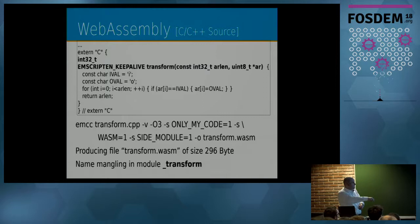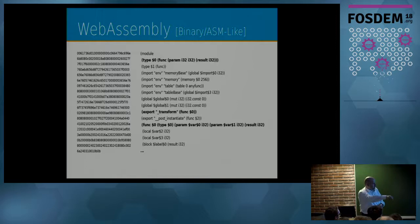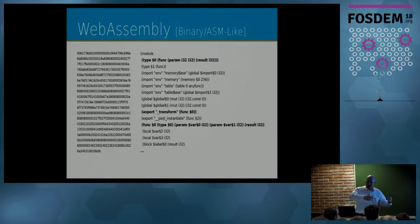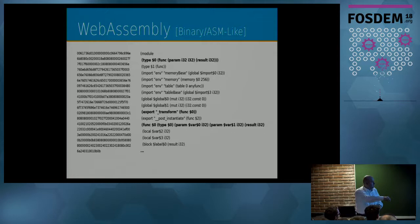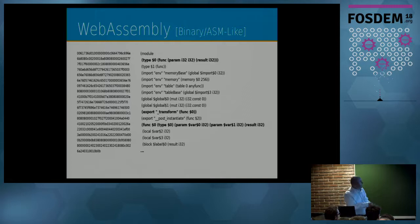The binary code is 296 bytes. The text-format representation shows the first parameter and the second parameter pointing to the location of the array within the linear memory. To call it, we create a linear memory, place the byte message into the linear memory at index zero, then call the function with the length of the array and index zero — telling WebAssembly where in the linear memory the array is located.